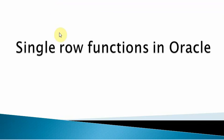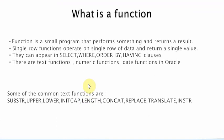Hello friends, welcome to my video. Today's video is about single row functions in Oracle. Let us first see what is a function. A function is a small program that performs something and returns a result. Single row functions operate on a single row of data and return a single value. They can appear either in the select clause, where clause, order by, or having clauses.